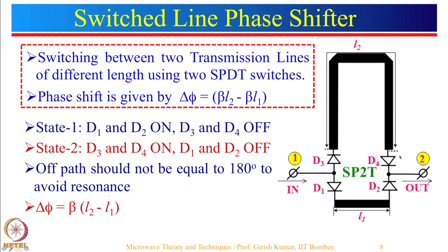When D3 and D4 are on and D1 and D2 are off, the input travels through the longer path to the output. When we change the state of these SP2T switches, there will be a phase difference at the output. The differential phase shift is given by beta times (L2 minus L1), where L2 is the longer path length and L1 is the shorter path length. One important precaution: do not make L2 equal to 180 degrees, which is equivalent to lambda by 2, because for a lambda by 2 length it will act as a resonator and performance will degrade.